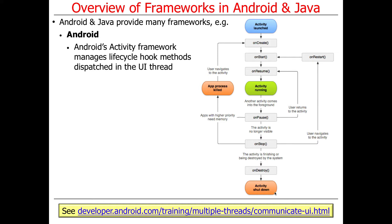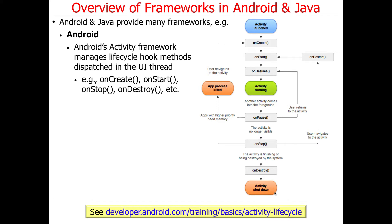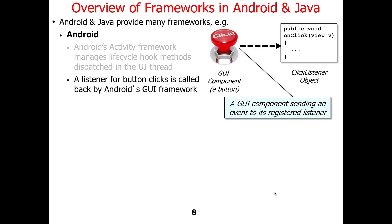Here are some examples of frameworks that Android provides. The activity framework, which is used to manage lifecycle hook methods that are dispatched by Android in the user interface thread. Under the hood when you program with Android, we've got all these hook methods: onCreate, onStart, onStop, onDestroy, and they're called at various times in the lifecycle of your application's activities. Another example of a framework are the click listeners for button presses. When you have a user interface in Android with a button and you push that button, that ends up being invoked as a callback on the GUI framework, which ensures that the right piece of code is dispatched to handle that click.